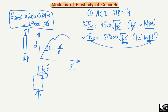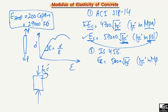The second code is the Indian Standard IS 456, which proposes: Ec = 5000 × √(f'c), where f'c must be in MPa. You find the concrete compressive strength in MPa, substitute it into this equation, and you get the concrete modulus of elasticity in MPa.